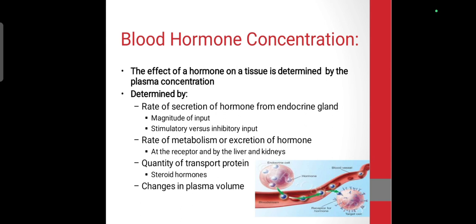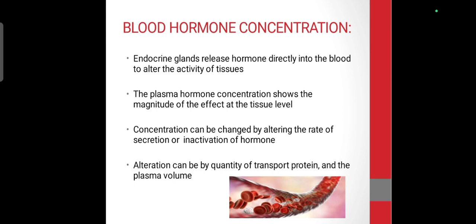Blood hormone concentration — the effect of a hormone on a tissue is determined by the plasma concentration, which is determined by: first, the rate of secretion of hormones from the endocrine gland, depending on stimulation or inhibition; second, the rate of metabolism or excretion of the hormone; third, the quantity of transport protein; and fourth, changes in plasma volume. Blood hormone concentration is directly related to how it alters the activity of tissues.